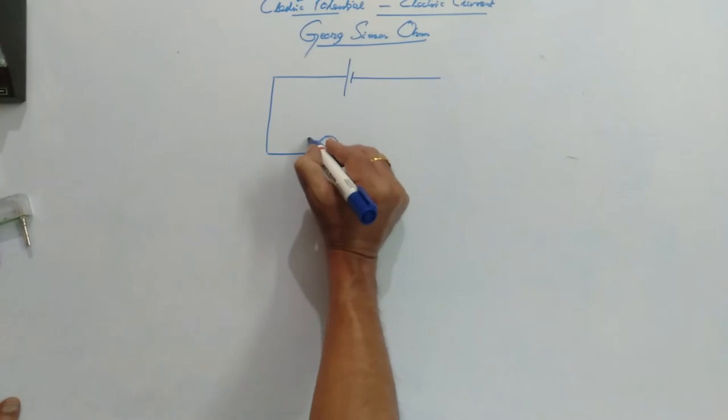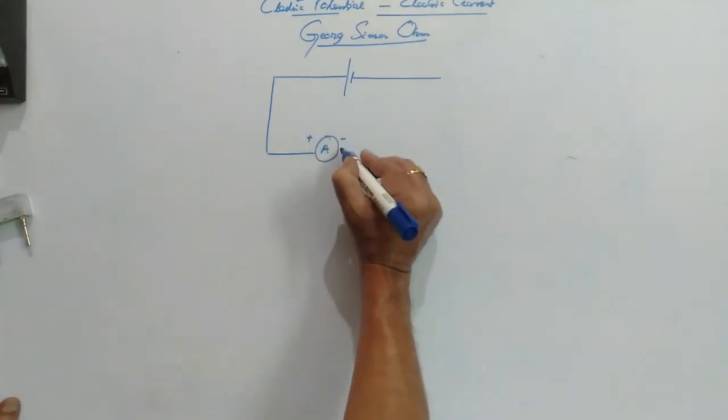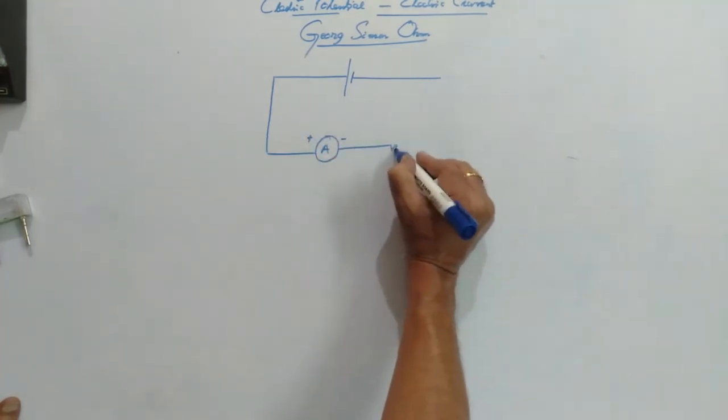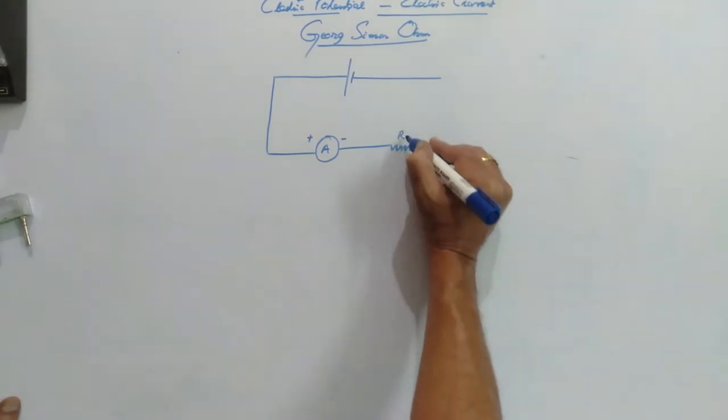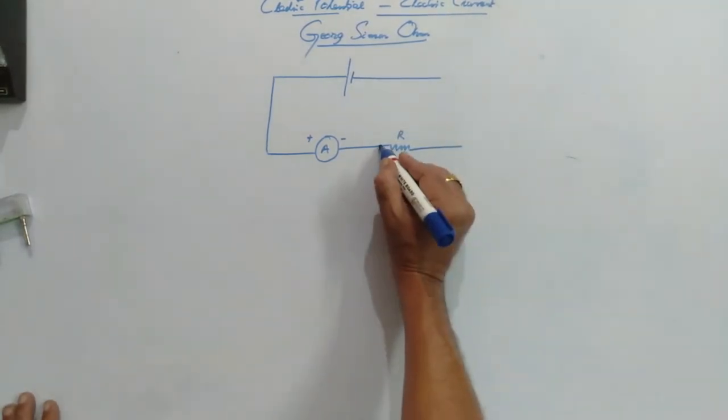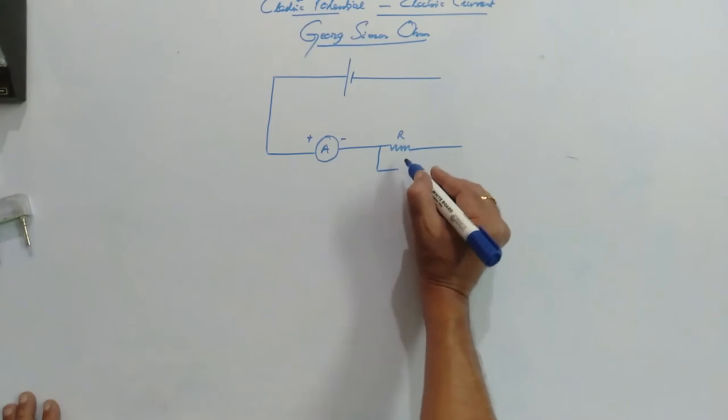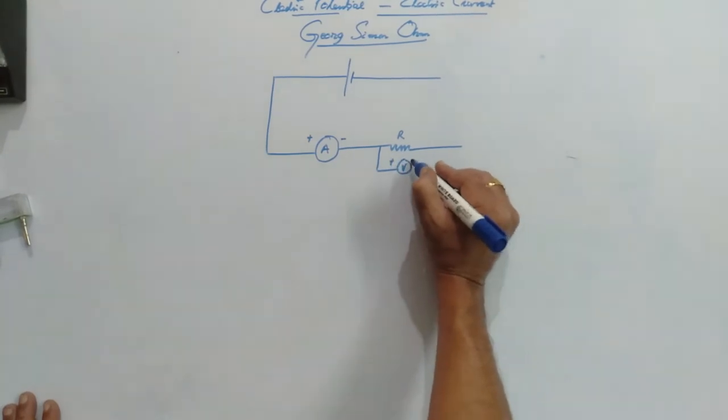resistance across which we wanted to study the relation between the potential difference and current. So this is voltmeter.